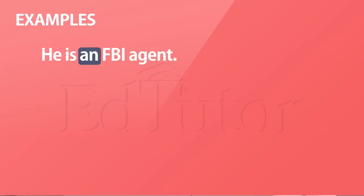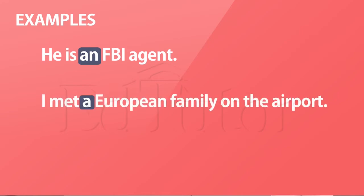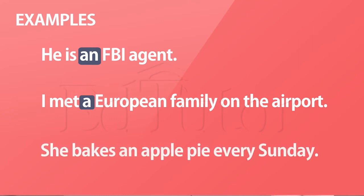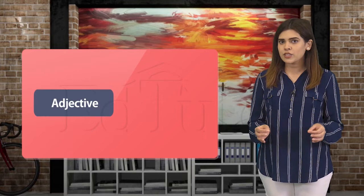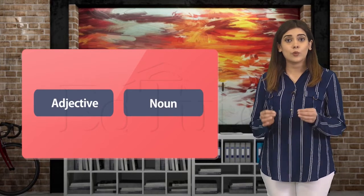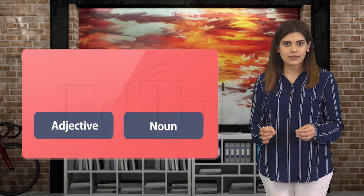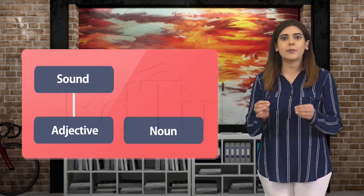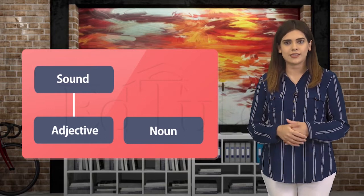Here are some more examples where indefinite articles are used, following the rules we just discussed. He is an FBI agent. I met a European family at the airport. She bakes an apple pie every Sunday. When there is an adjective before the noun, we choose our article based on the sound at the beginning of the adjective.